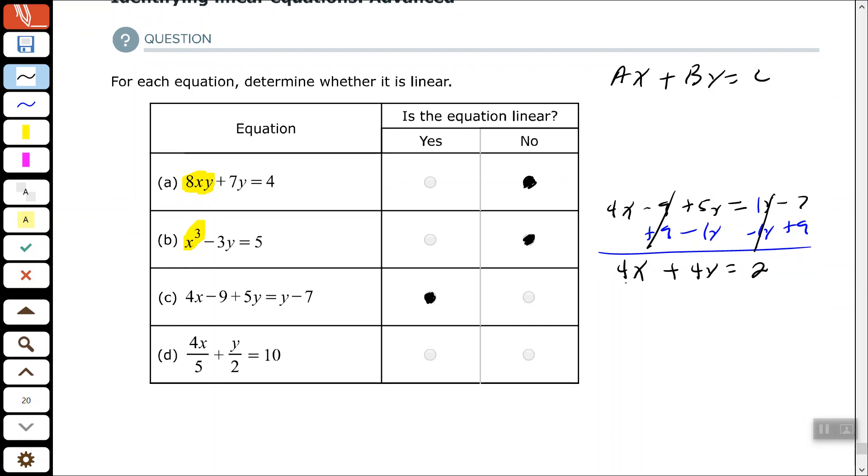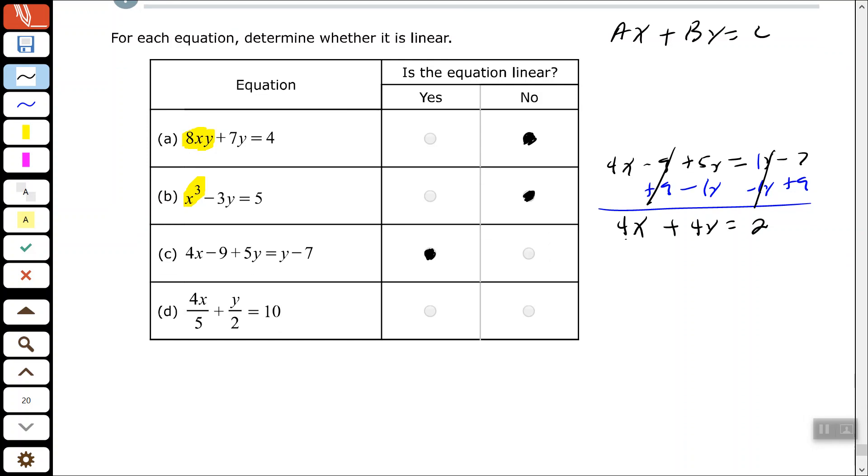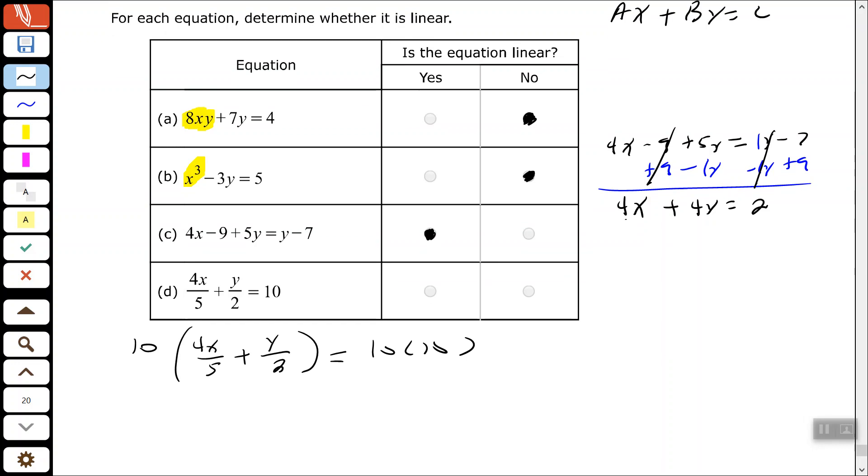Part D, we have numbers in our denominator. That could be fine because we can clear those numbers out of our denominator by multiplying both sides of the equation by the least common multiple of our denominators, which is 10. So, if I multiply both sides by 10, I should be able to clear those variables or those numbers, sorry, out of my denominator.